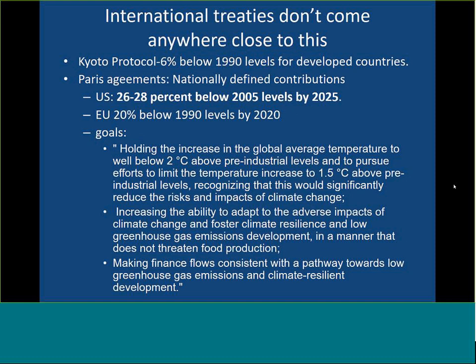The international agreements we've had haven't helped enough. The Kyoto Protocol set emissions at 1990 levels for developed countries, but China, Brazil, and Mexico didn't have to participate. Because of a bubble provision, the EU had collective conditions but individual countries didn't — and the base year of 1990 conveniently captured the reunification of Germany, which absorbed East Germany's old inefficient factories, meeting European targets without any additional work.